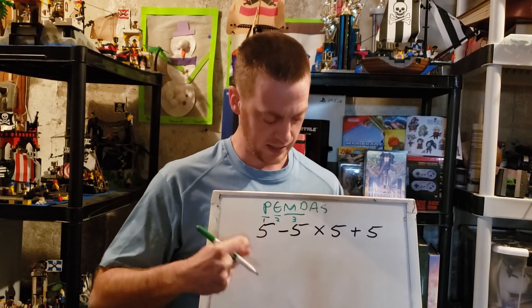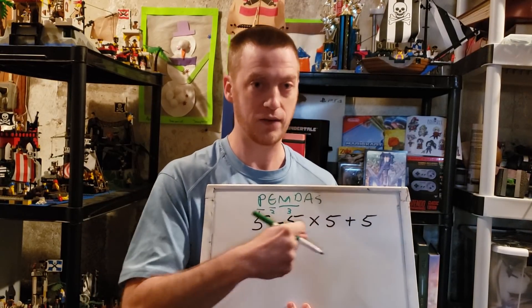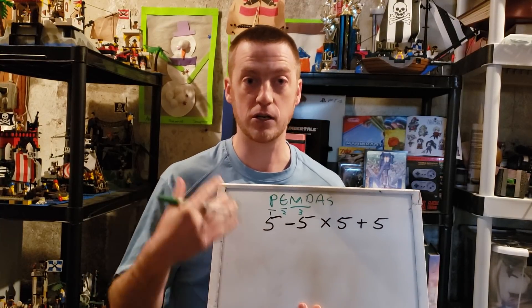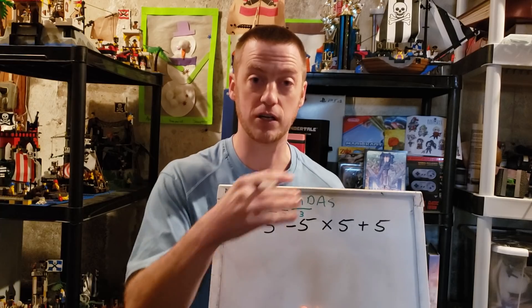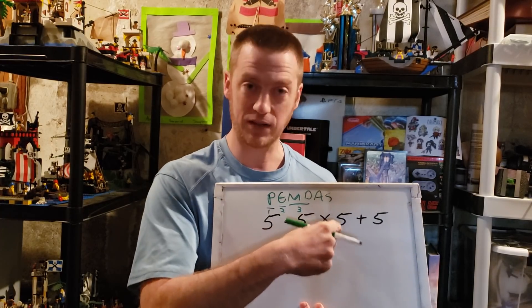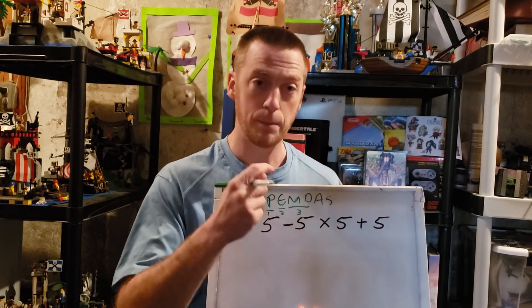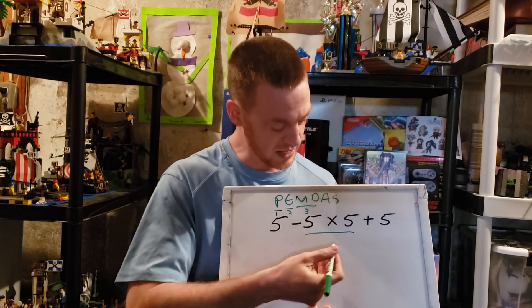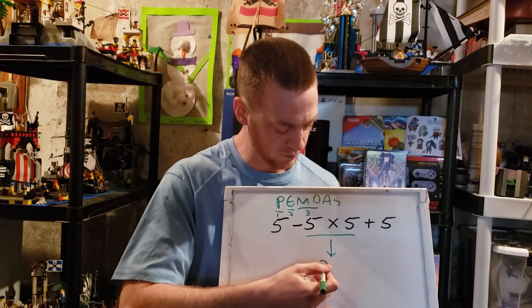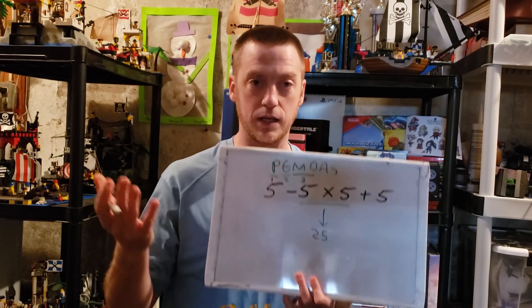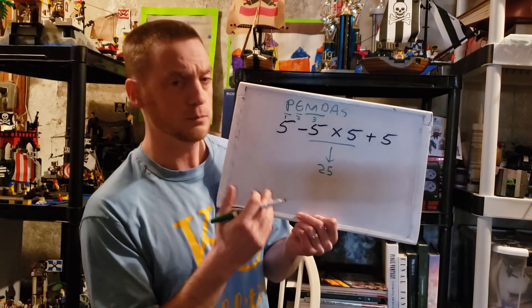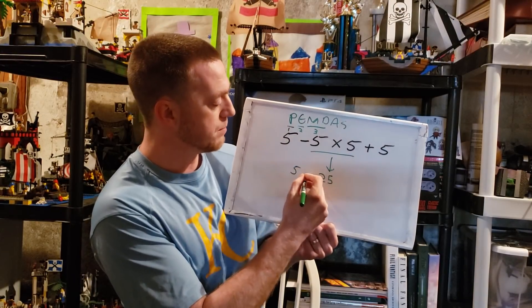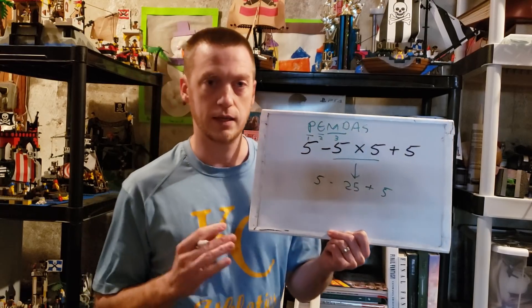So multiplication and division would happen in the third sequence. Now in this problem here there is one multiplication that has to happen: 5 × 5. This is really one term because by definition terms are separated by addition or subtraction. So this 5 × 5 is really one term, but order of operations says that would have to happen first. So let's do that. 5 × 5, that is equal to 25. So now 5 × 5 is 25. Now we're left with 5 minus 25 plus 5.